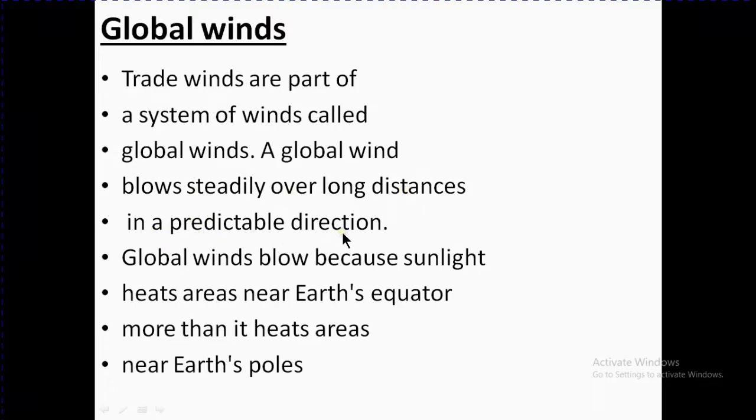A global wind blows steadily over long distances in a predictable direction. Global winds blow because sunlight heats areas near Earth's equator more than it heats areas near Earth's poles. The area near the equator becomes more heated compared to the area near the Earth's poles.